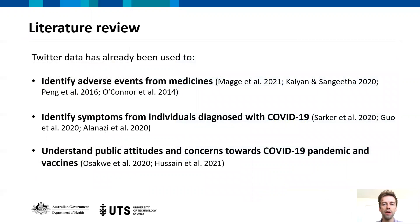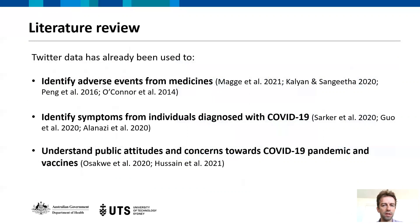As a quick literature review: Twitter data has already been used to identify adverse events from medicines using a variety of different techniques. There's a pre-print from July 2021 following a roughly similar process to ours, and the Kellyanne Sanjeeva paper has some rough similarities. There has also been work identifying symptoms from individuals diagnosed with COVID-19. These studies have revealed that Twitter data can be used to understand self-reported symptoms from COVID-19, and some symptoms were identified prior to being announced by the CDC.